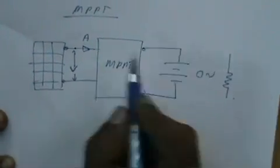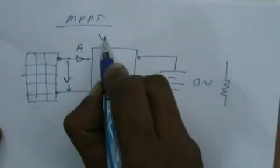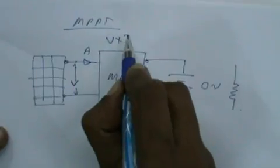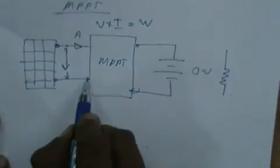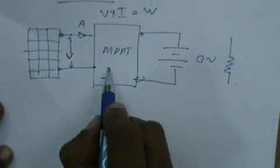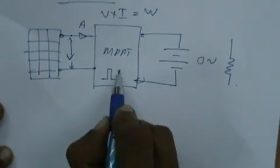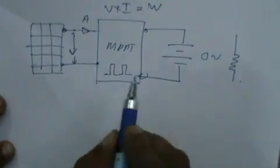So the power is V into I. What I am doing here is varying the PWM — increasing the PWM. So the current will increase, slowly increasing the current. As the panel current increases, the panel voltage will come down. Then I multiply V into I at each point.